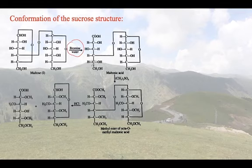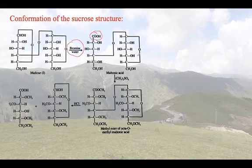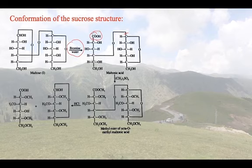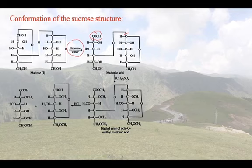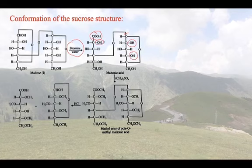When treated with bromine water, the free anomeric carbon is oxidized to give maltonic acid — a monocarboxylic acid. One of the glucose rings is opened and oxidized to an acid. The second glucose, whose anomeric carbon is used for the glycosidic linkage, does not form an acid. Only the free anomeric carbon converts into a carboxylic acid. This maltonic acid is then used for methylation.